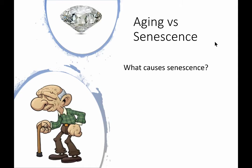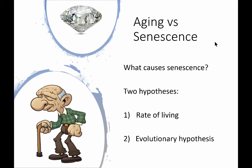It may interest you that there's no fundamental physical reason — no law of physics — that means an organism has to go through senescence. There are some species, such as lobsters, that don't go through senescence. Lobsters can still be killed by predators, disease, or fishermen, but they don't go through this degradation of quality of living. So why do we? There are two hypotheses: one is the rate of living hypothesis, and the other is the evolutionary hypothesis. We'll consider each in turn.